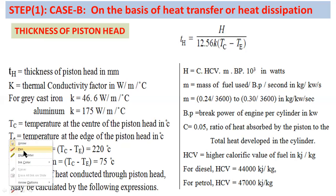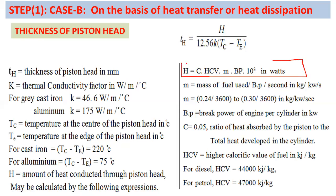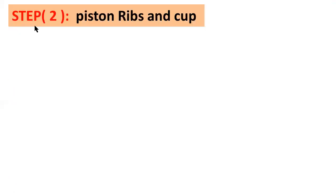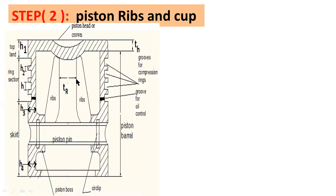These two formulas are very important for the design of a piston on the basis of heat transfer. Step one is now complete. Step two is the design of piston ribs and piston cup. Piston ribs depend on the size of the piston, and the piston cup depends on the type of combustion chamber.